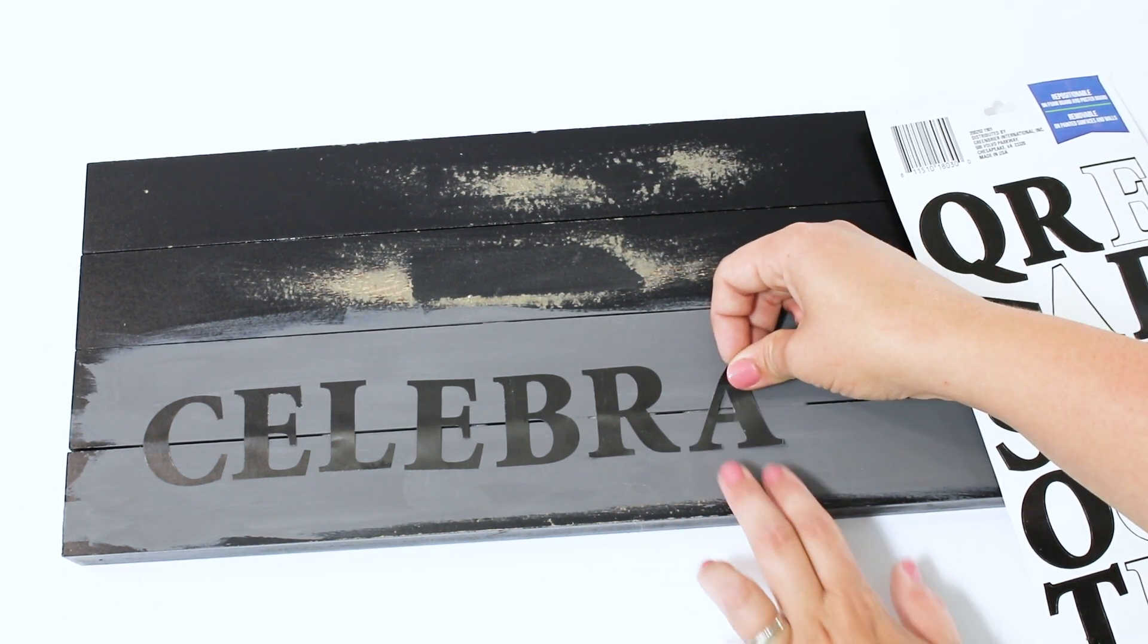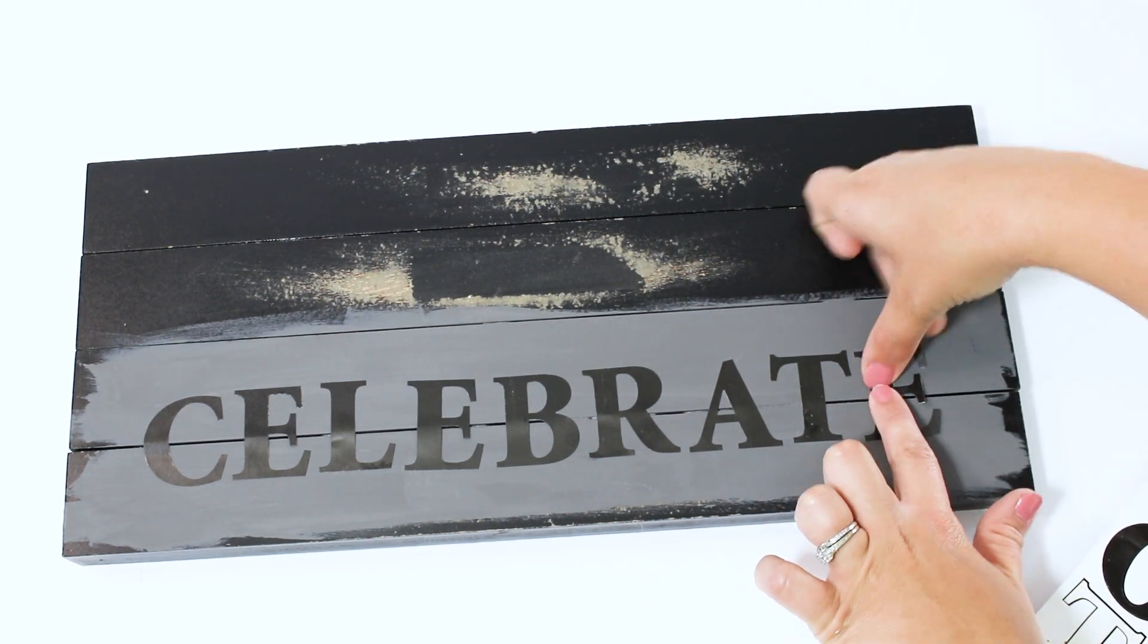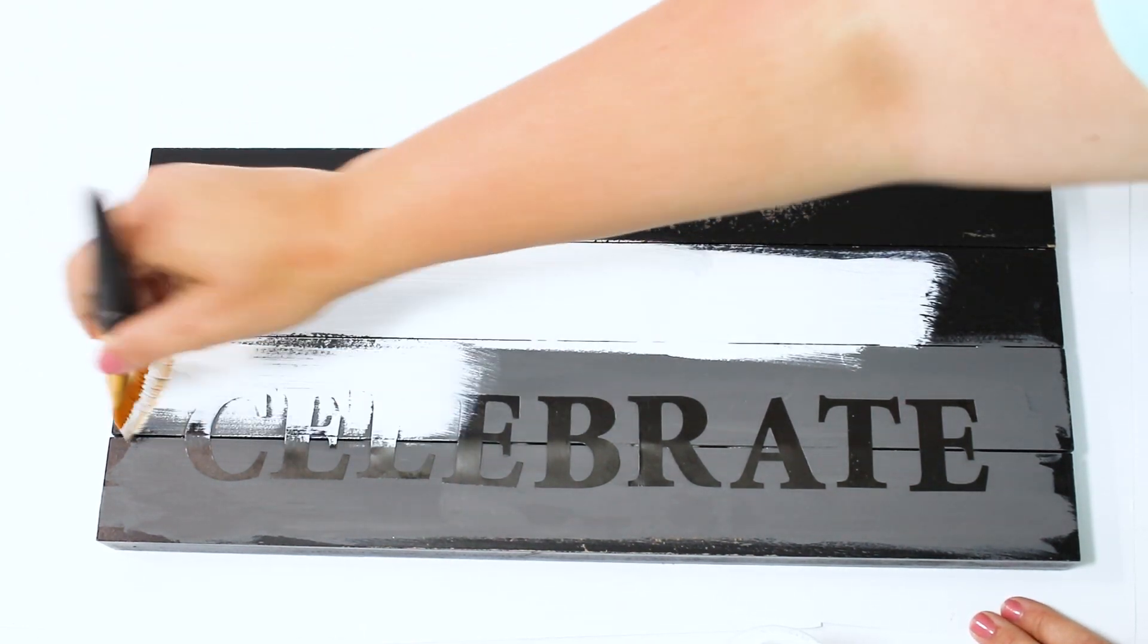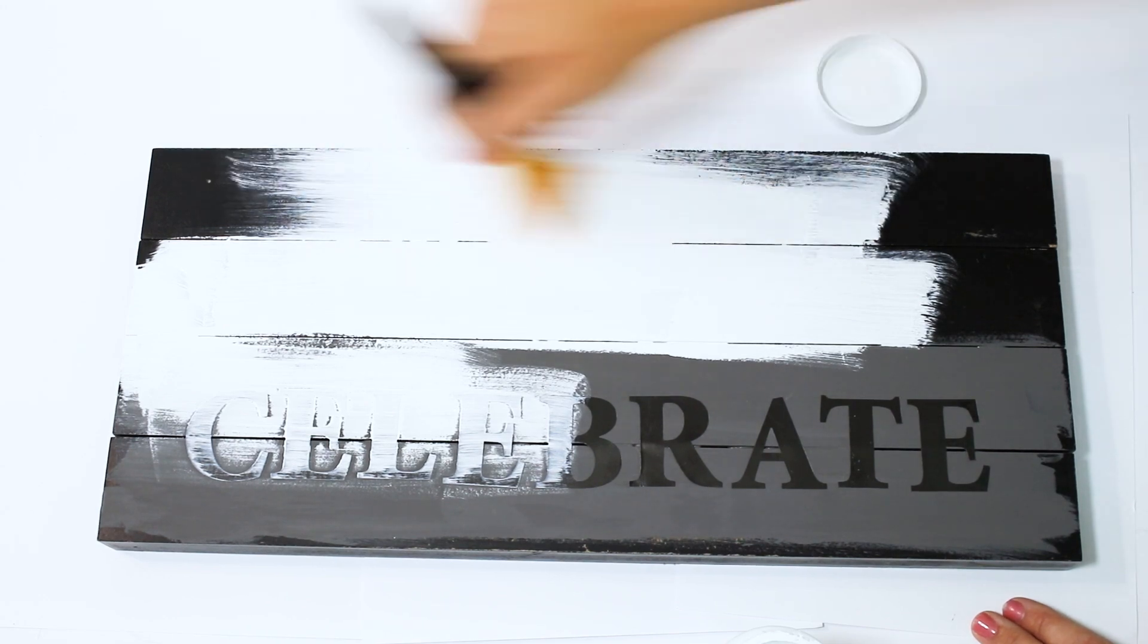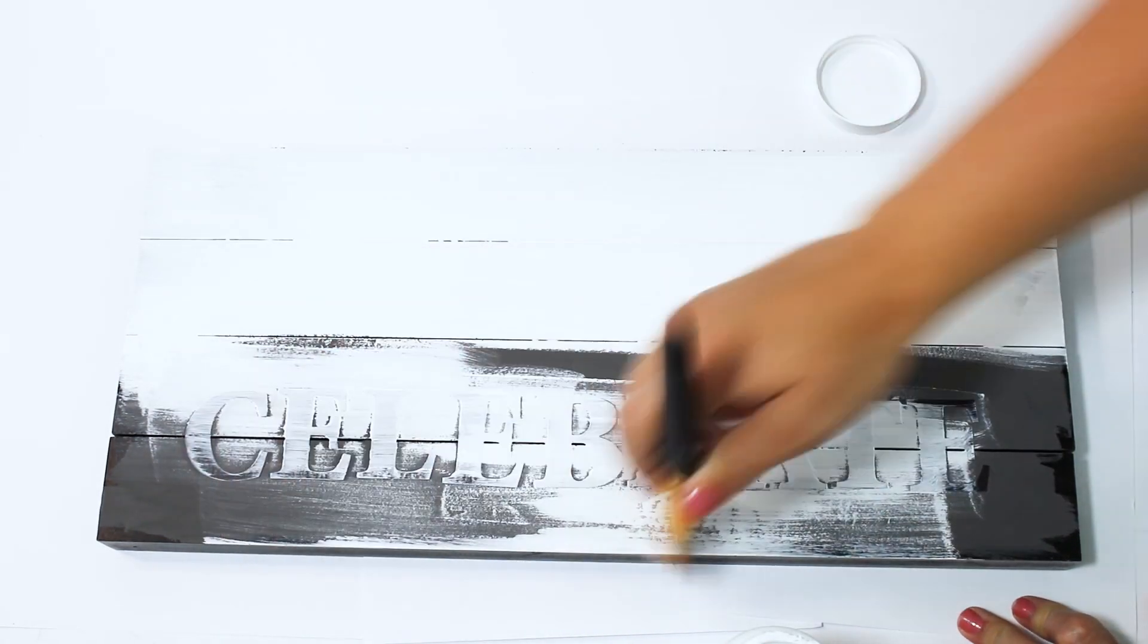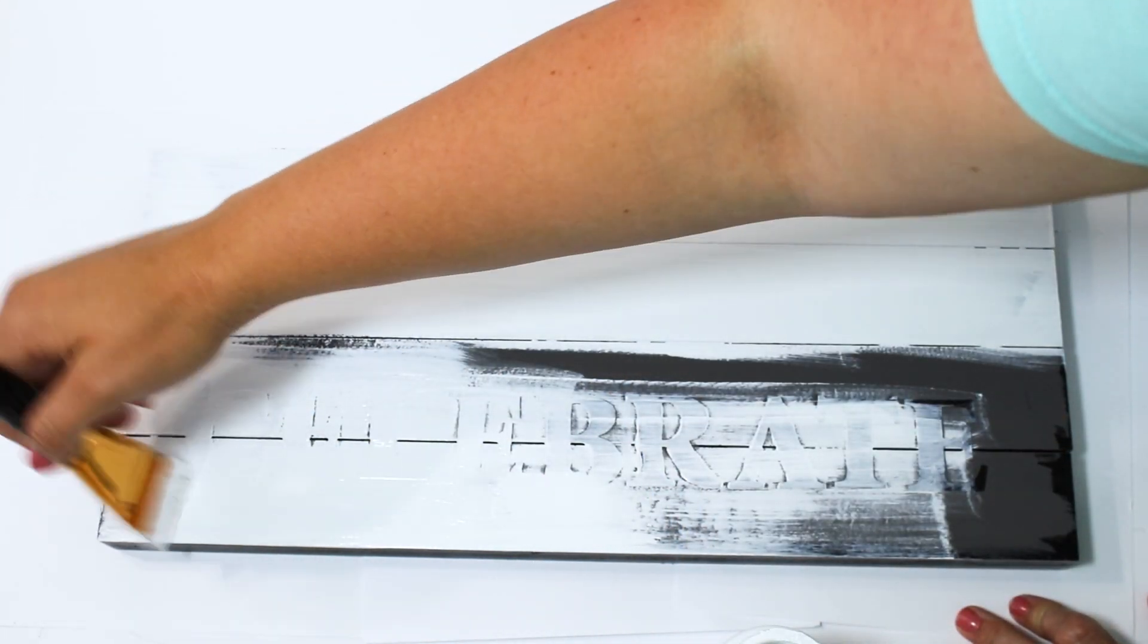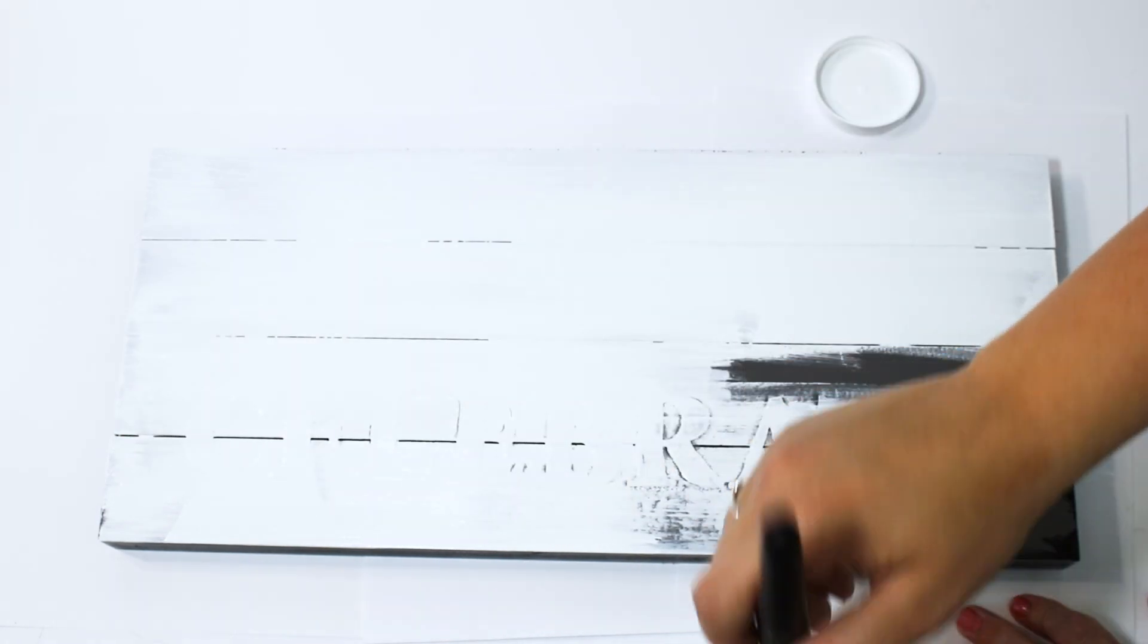After I made sure that my stickers were pressed down really tightly, I decided to paint a couple coats over this in my white Waverly chalk paint. I just love how this works because whenever I paint over it in white and then I can remove the letters, it makes the gray show through. And then whenever I sand over it, it gives it such a beautiful way to create the words without being such harsh lines.